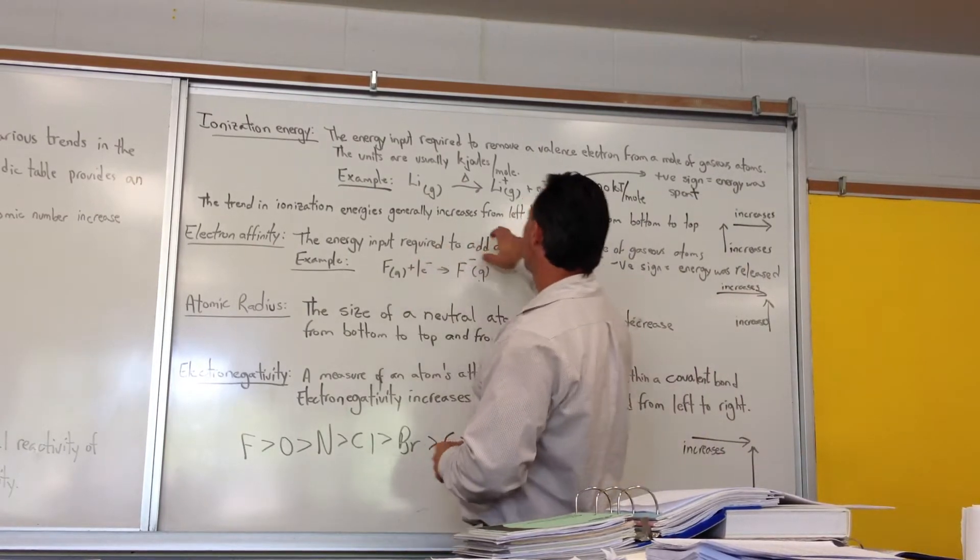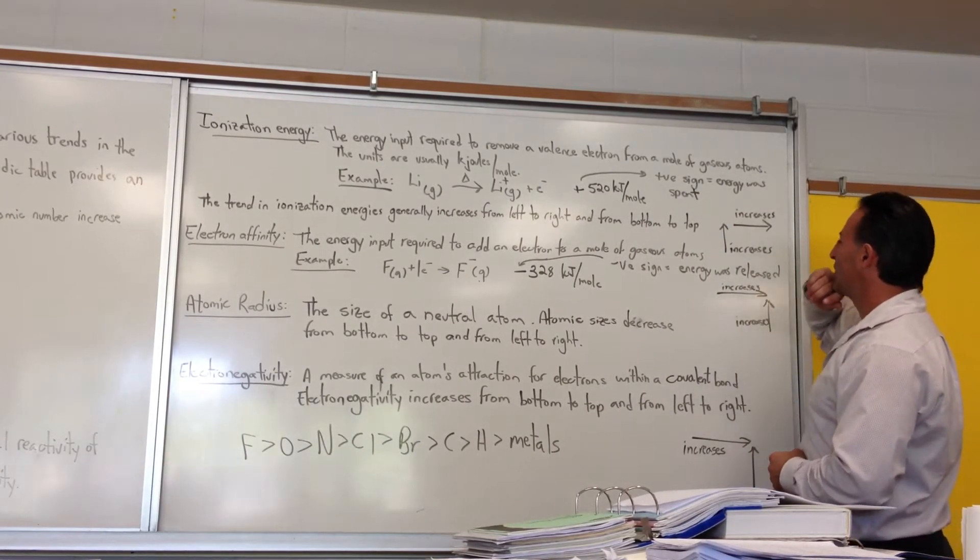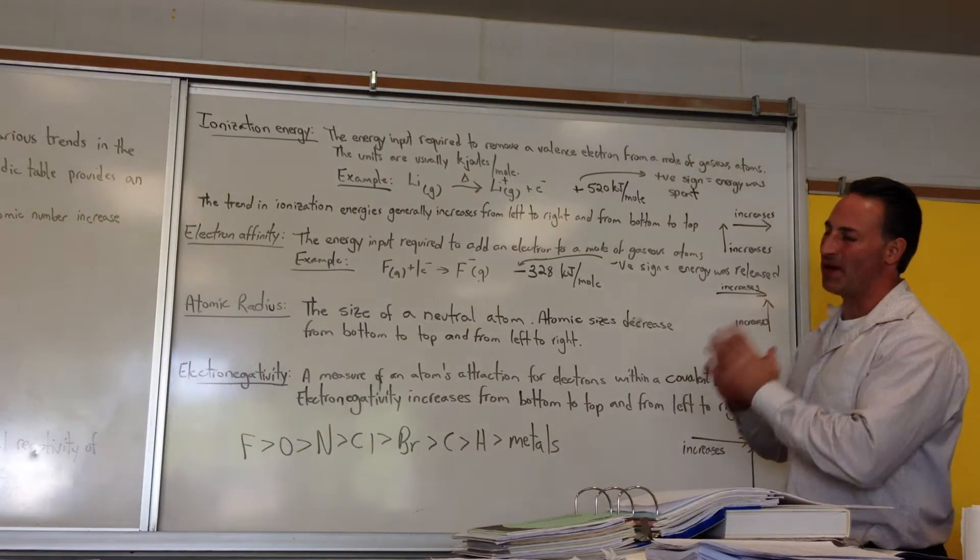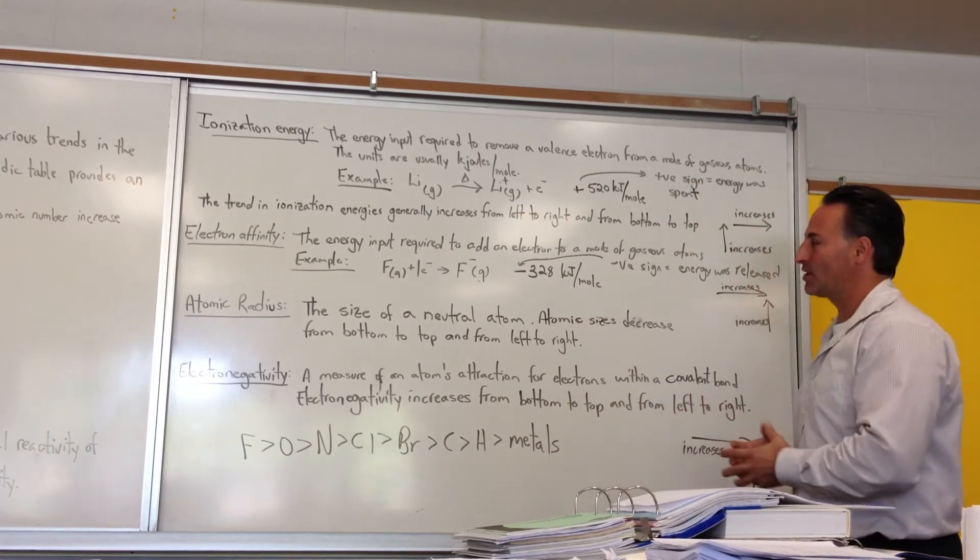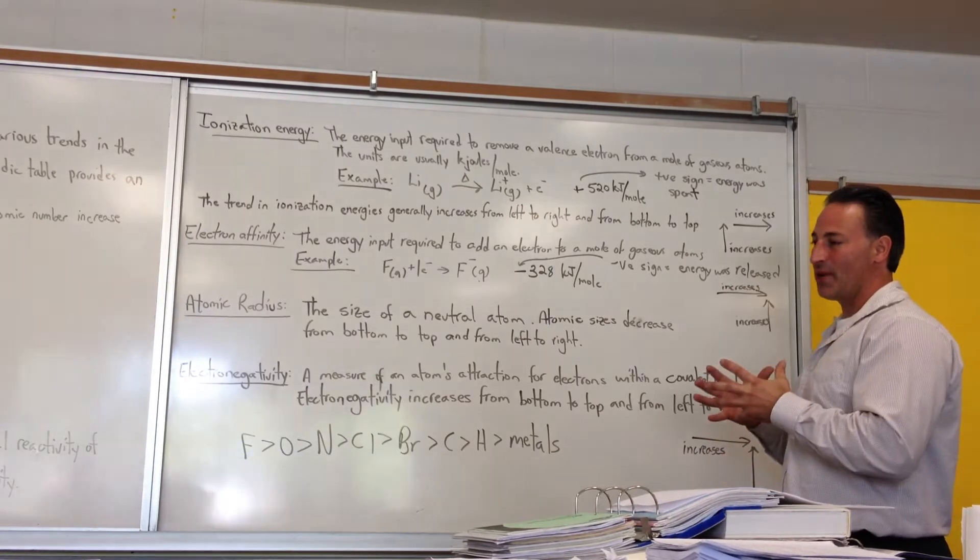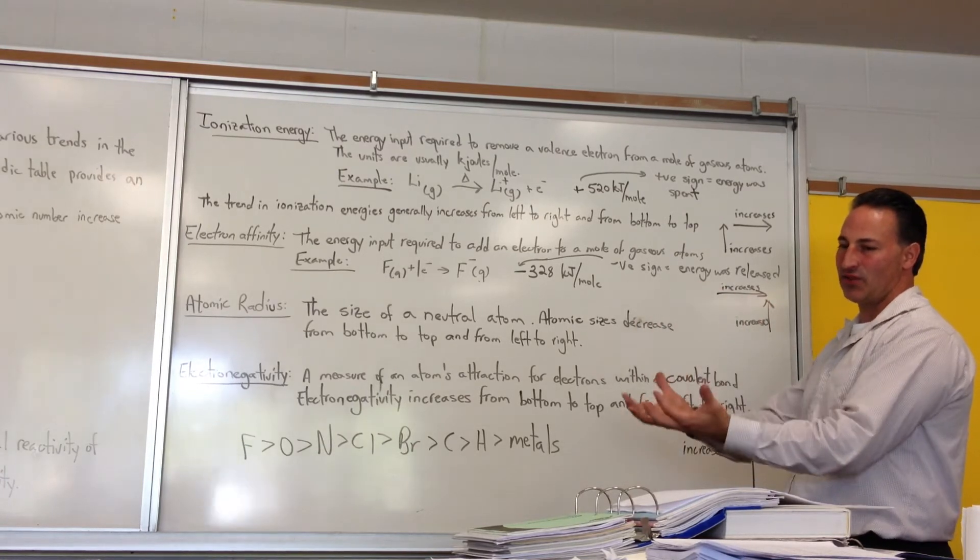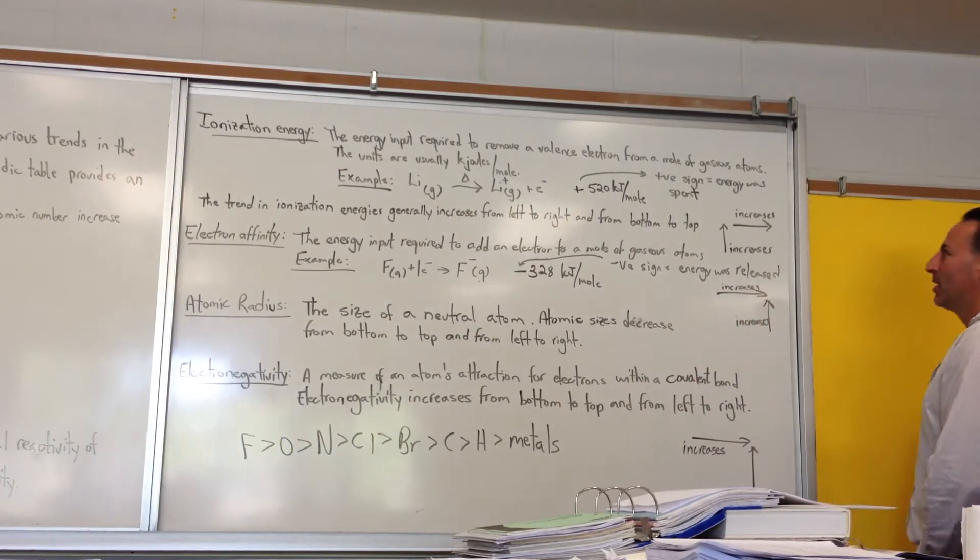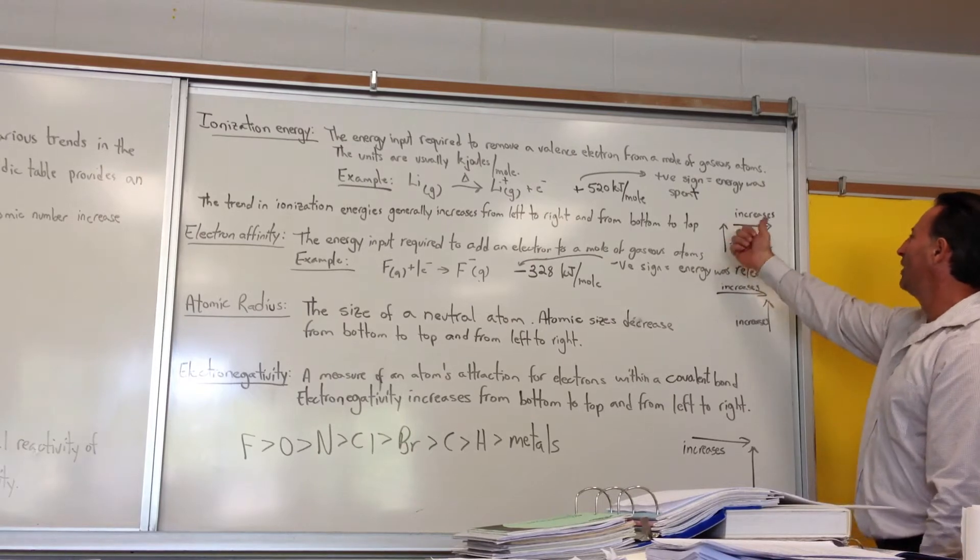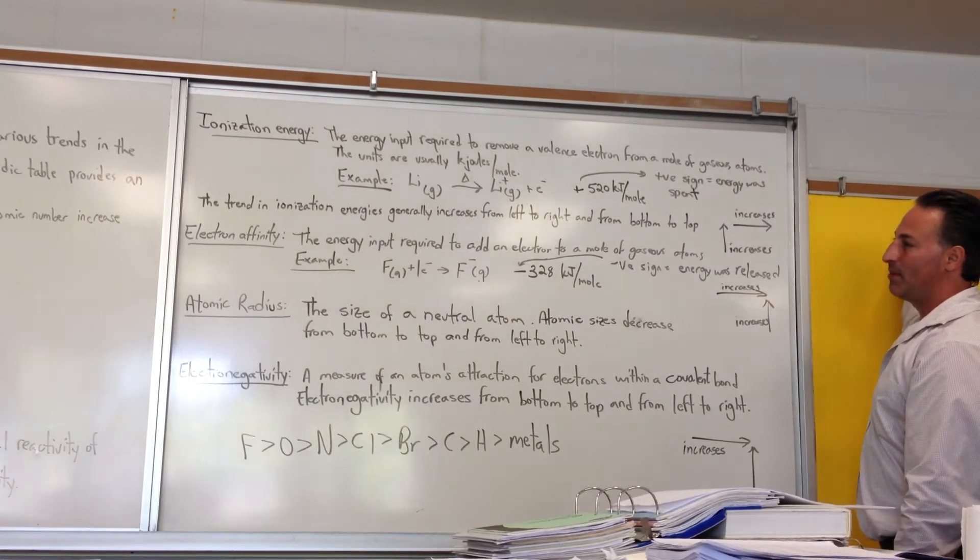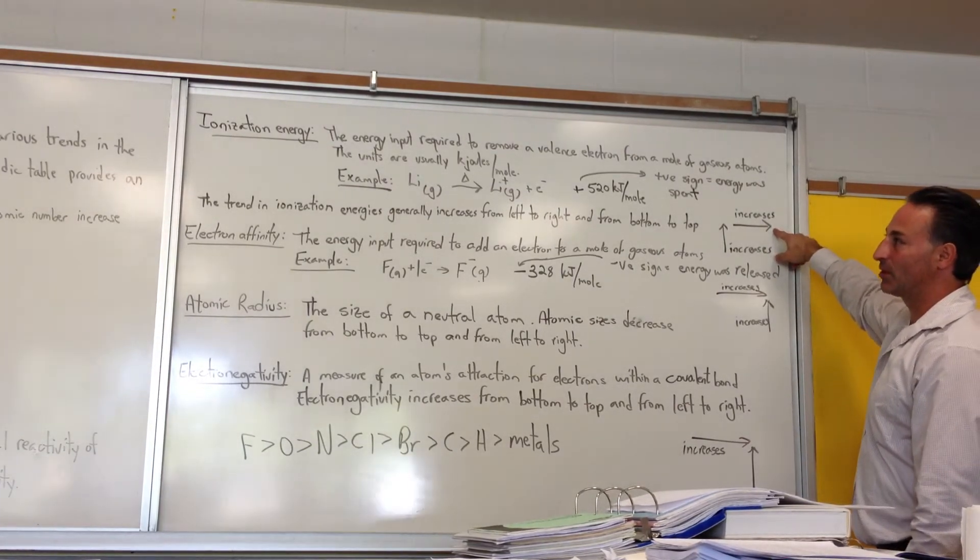At any rate, the trend in ionization energies generally increases from left to right and from bottom to top. So the biggest elements, the biggest metals—first of all, metals tend to lose electrons. They're the ones that require the least energy expenditure to ionize. They give up electrons easily. But in addition to that, the bigger the metal, the more easily it loses one of its valence electrons, because its grip on that last shell of electrons on the outside of the atom tends to be weaker compared to the smaller atom. So ionization energies tend to increase as the atom gets smaller, and also as it tends more to becoming a non-metal. So fluorine would be very hard to ionize.